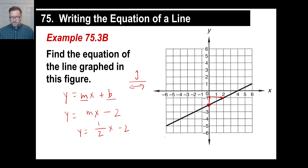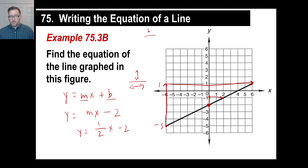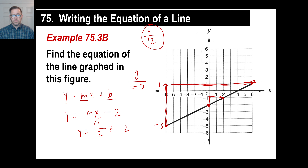Let me prove to you it doesn't matter which two points you choose. Instead of those two easy points, say I went all the way from negative 5 up to 1 on the y-axis — that's 6 units up. And going from negative 6 to positive 6 on the x-axis — that's 12 units over. Six over twelve reduces to one-half. It doesn't matter which two points you choose, as long as they're nice and on a corner. You always get the same slope.